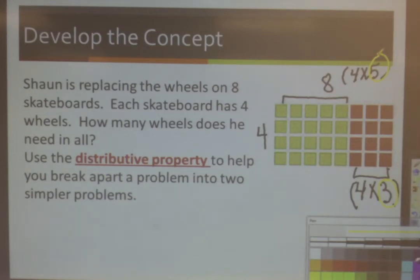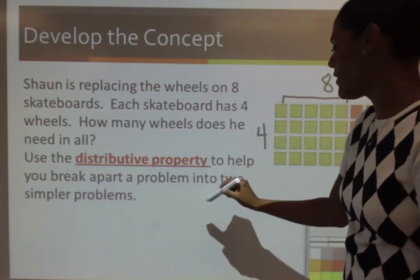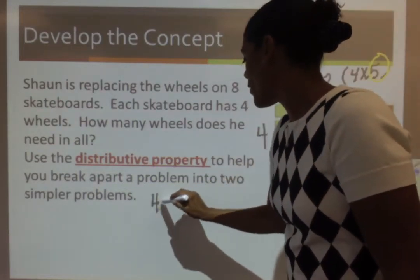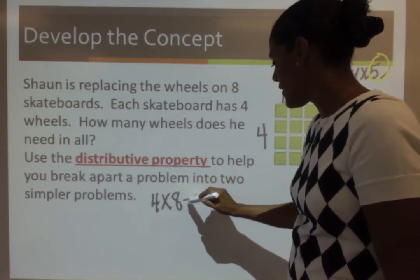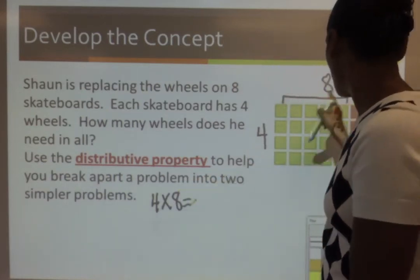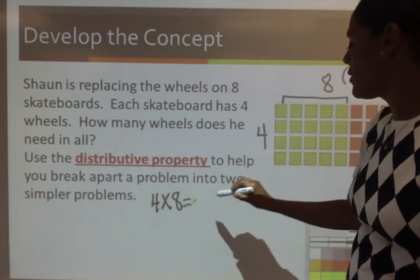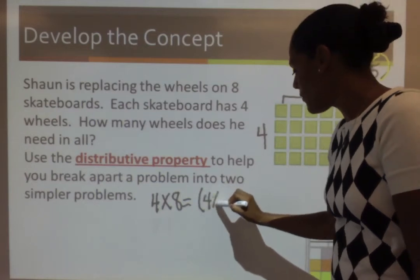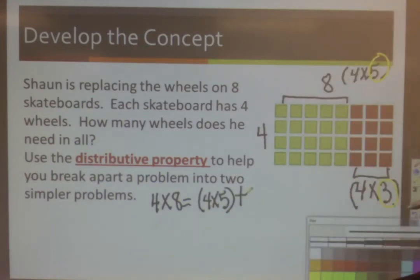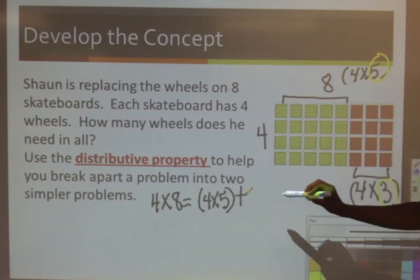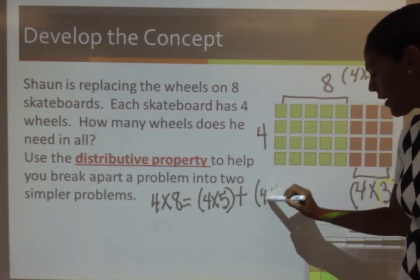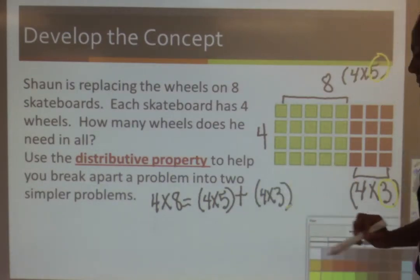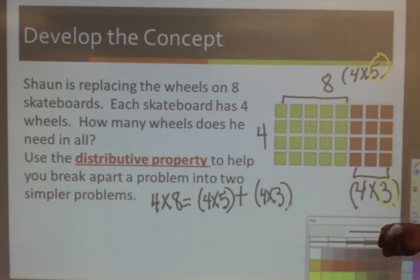So, let's write our equation. We're going to write it this way. 4 times 8 is equal to, and then we're going to pick our first problem. 4 times 5 plus, and then our second problem, which is 4 times 3. And that's how you write the distributive property out.